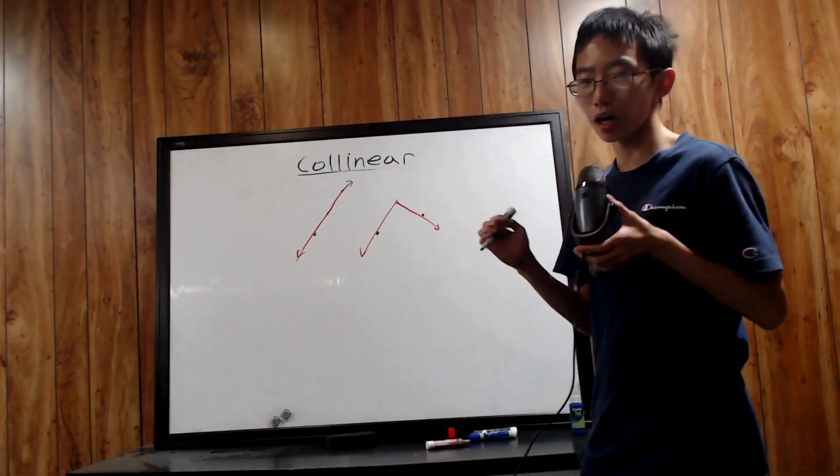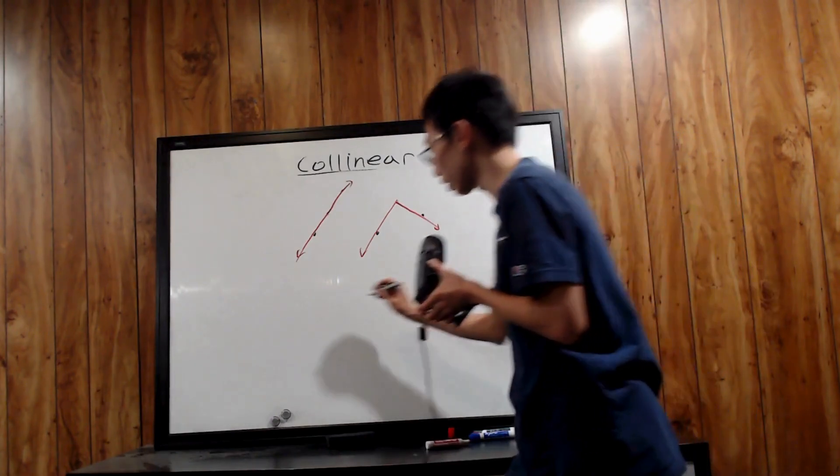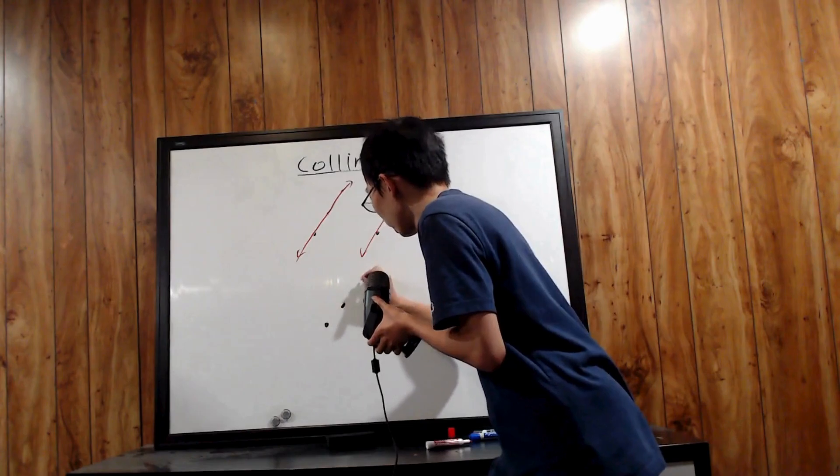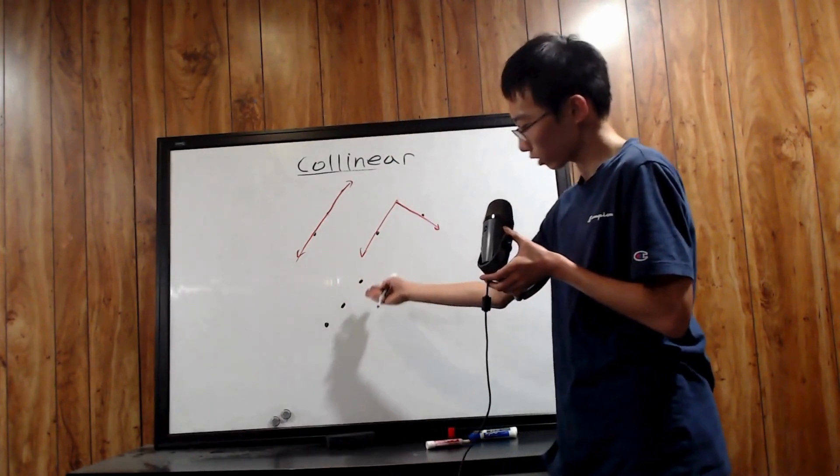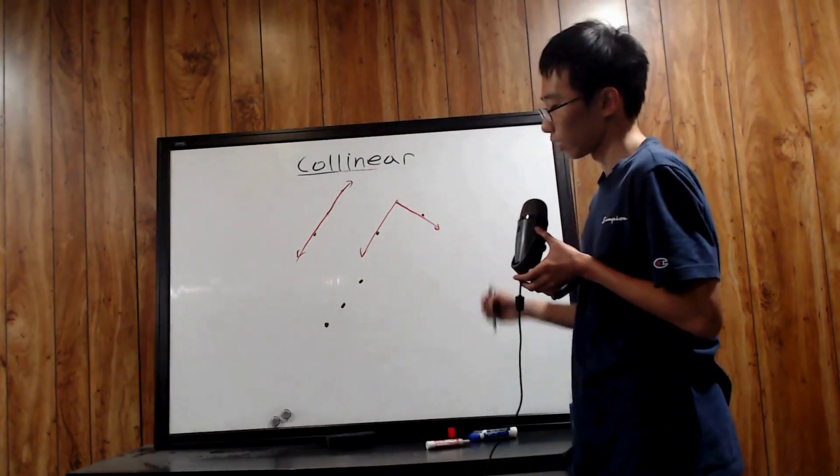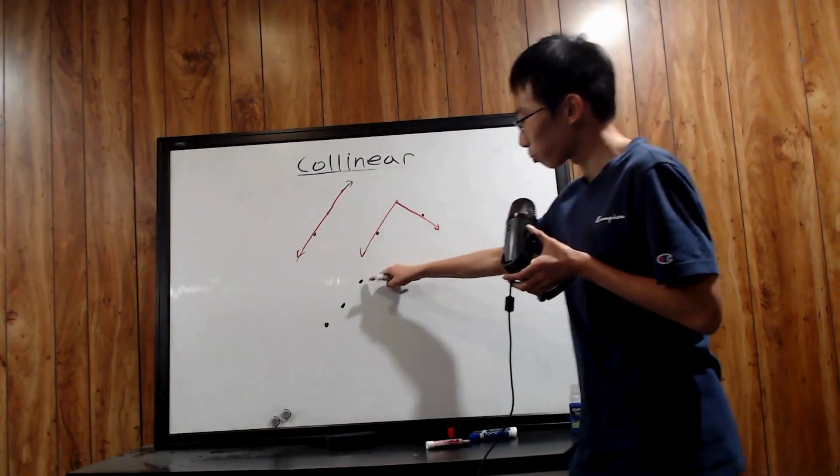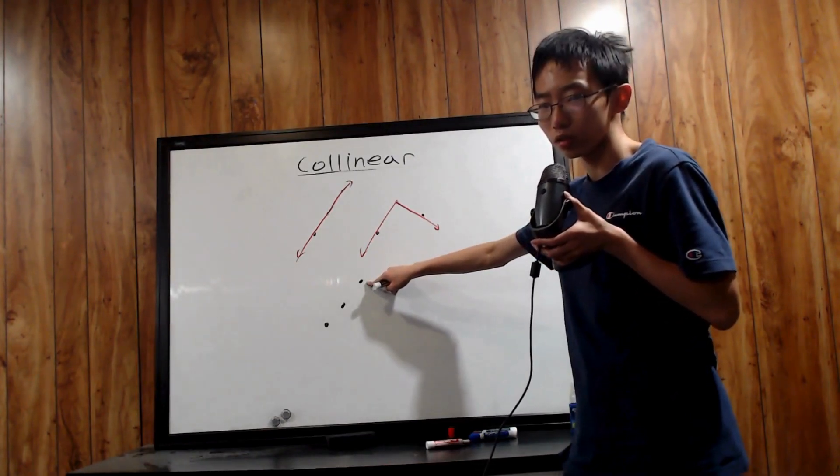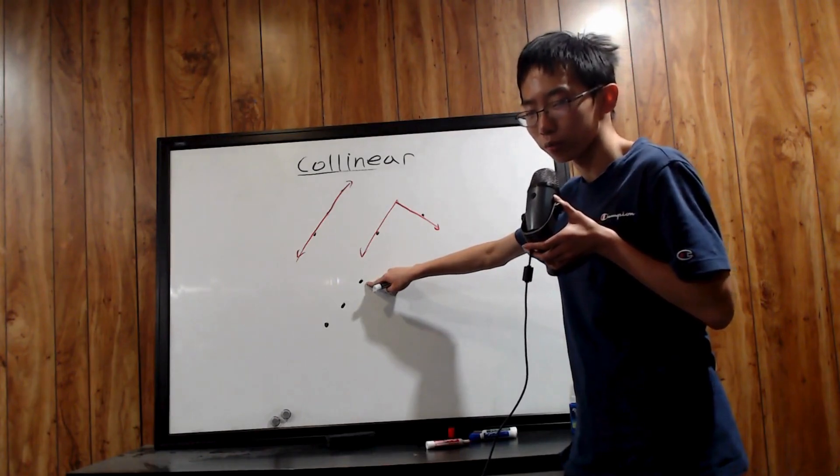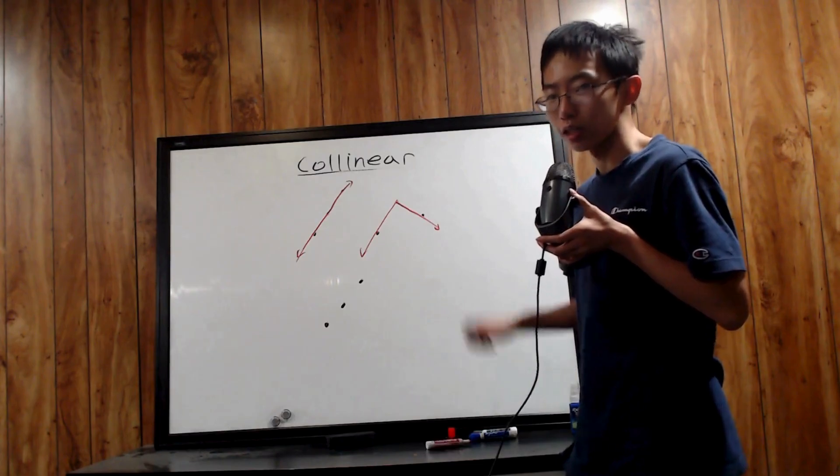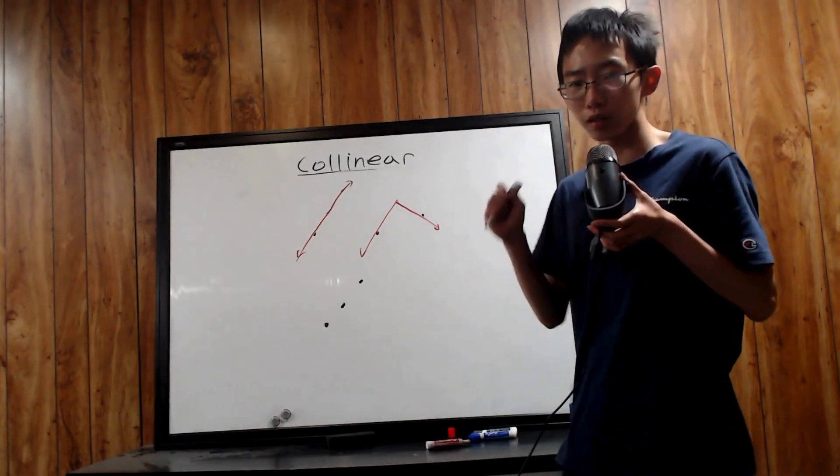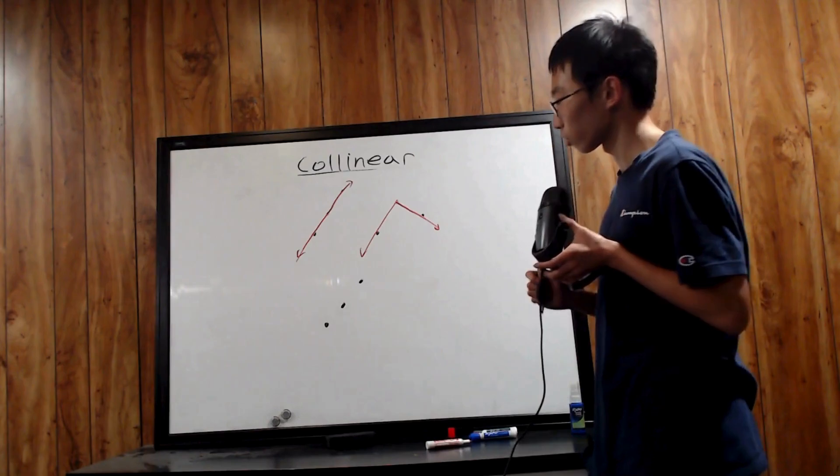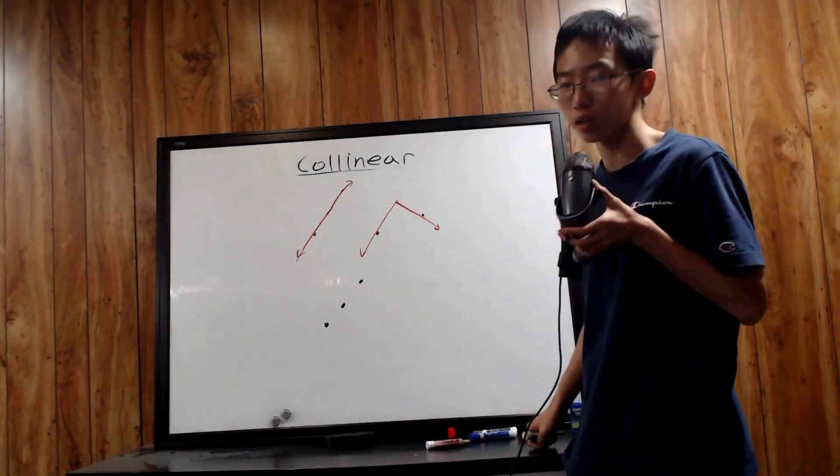However, there are cases in which it might be less obvious. For instance, if I gave something like this, they look collinear, it looks okay. However, what if this point is just 0.00001 unit away from being collinear? You can't tell that by eye. Therefore, you're going to need some rigorous geometric proofs in order to conclude whether they are collinear or not.